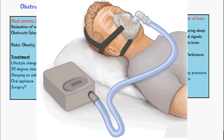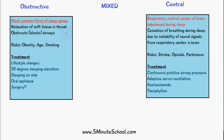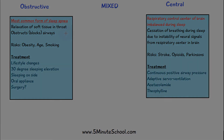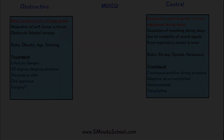Adaptive servo ventilation is another device that can be used for central sleep apnea. The main difference is you can adjust the amount of air inspired, and if you haven't taken a breath in a while it can force or deliver a breath of air depending on the time between breaths. Some medications can also be given, such as acetazolamide and theophylline, which are used to stimulate breathing in central sleep apnea.